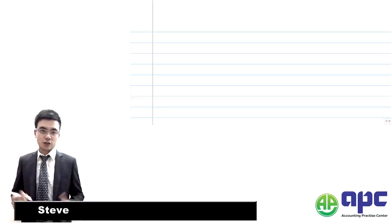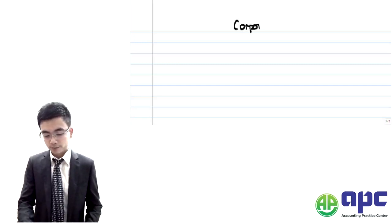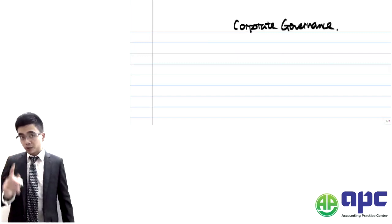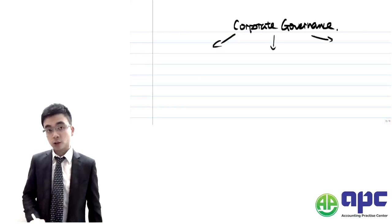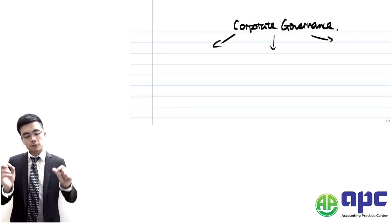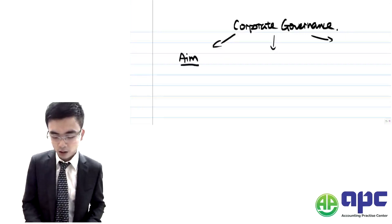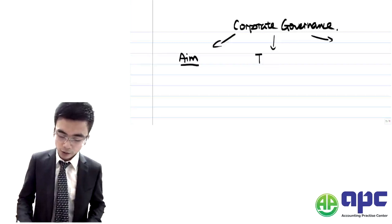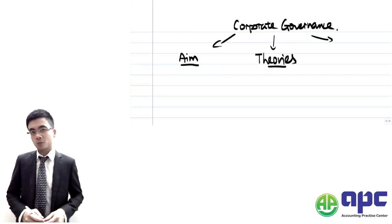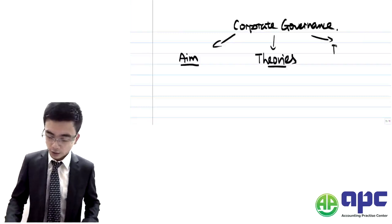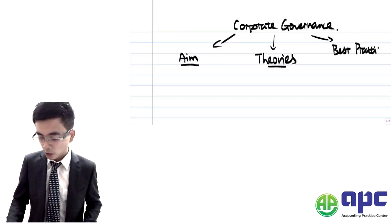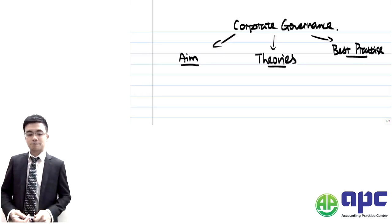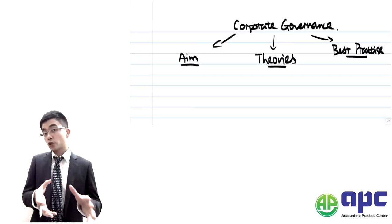Hi, this is Steve. In this section, we're going to look at something called corporate governance. When talking about corporate governance, there are particularly three issues we're going to look at. We're going to look at an overview of corporate governance: first, what is the aim of corporate governance? After that, we'll look at four theories that underpin corporate governance. Then we'll focus on the best practices that most companies nowadays adopt in order to have good corporate governance to show investors and the company. Let's kick off with the aim of corporate governance.